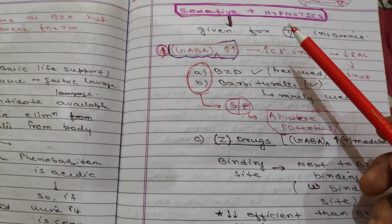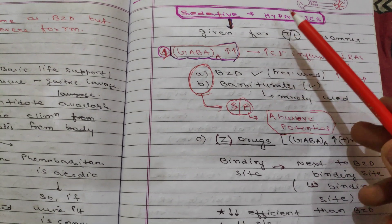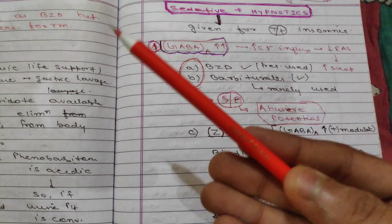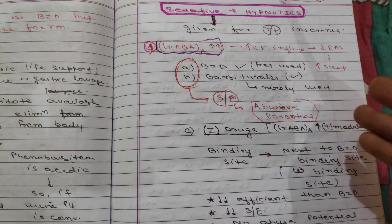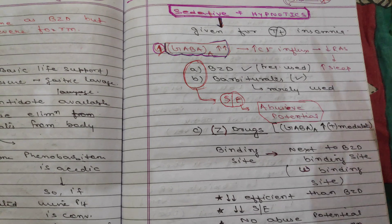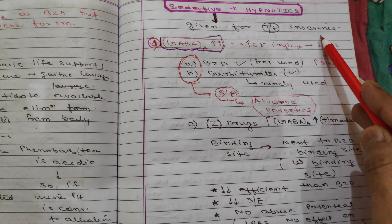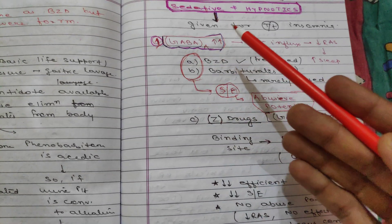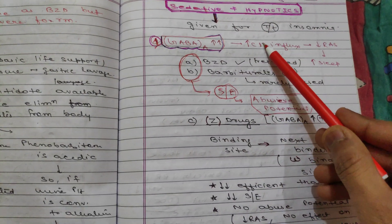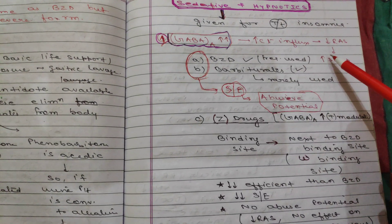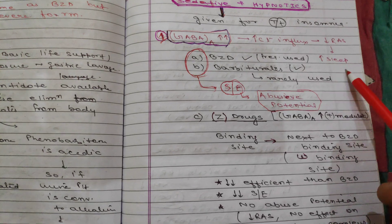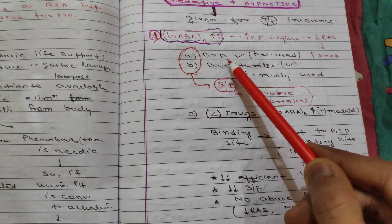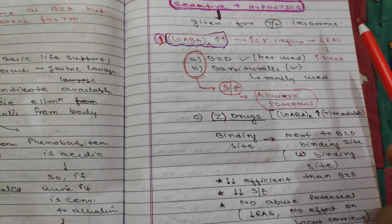Hello friends, this is our next video on drugs acting on the CNS — specifically sedatives and hypnotics. As we have discussed many drugs such as barbiturates and benzodiazepines in our previous video, sedatives and hypnotics are given for the treatment of insomnia. If the GABA-A receptor is stimulated, it will lead to chloride influx, causing negative potential generation, RAS suppression, and induction of sleep.